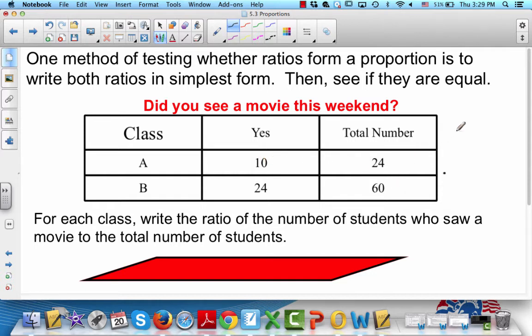10 people saw the movie, and there were a total of 24 students. In the second class, class B, 24 people saw the movie, and 60 people were in the class.